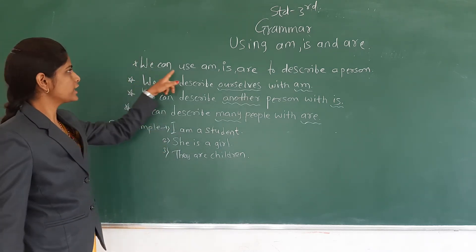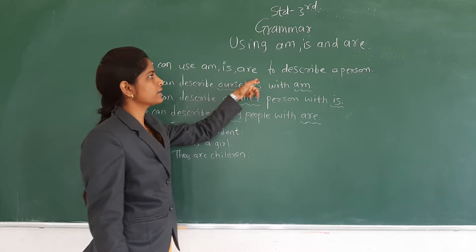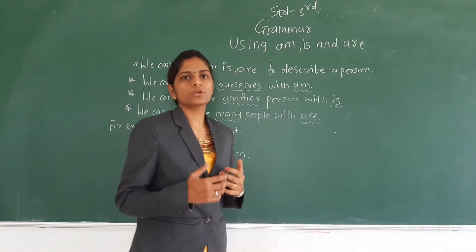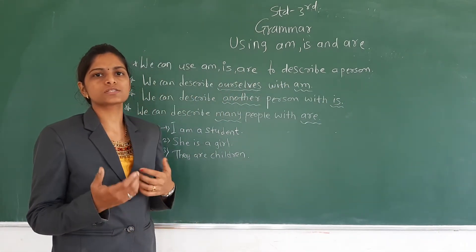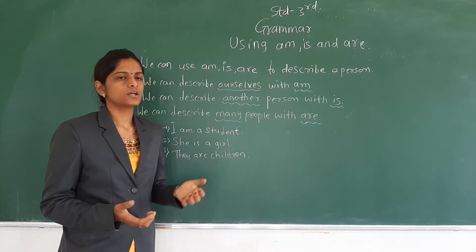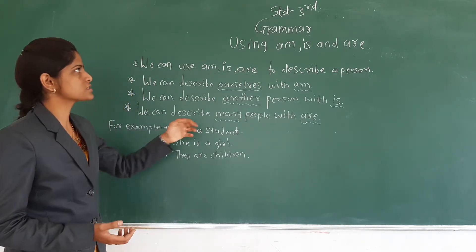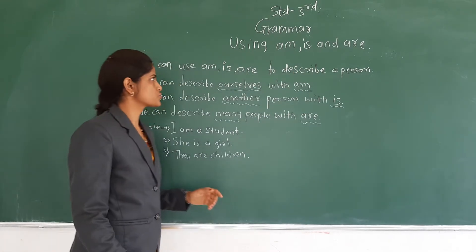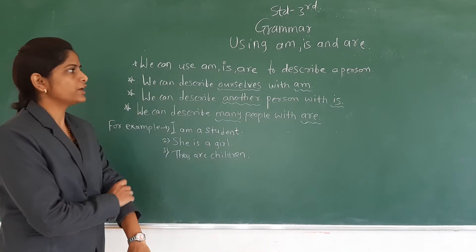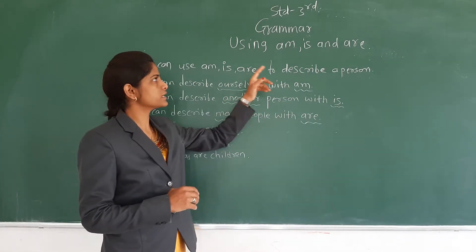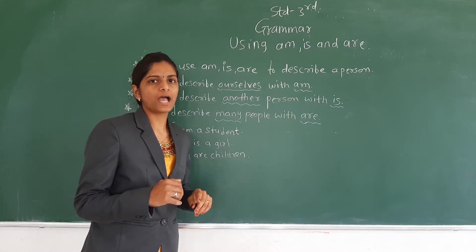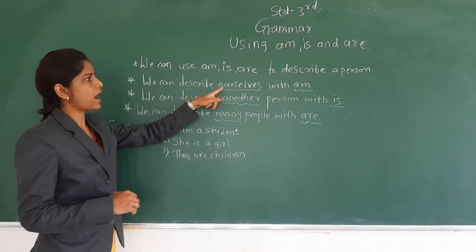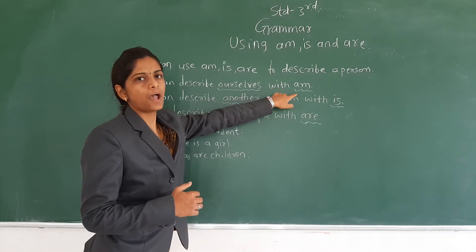We can use am, is, and are to describe a person. To describe a person means to say something about a person. So when to use am, when to use is, and when to use are — we can describe ourselves with am.